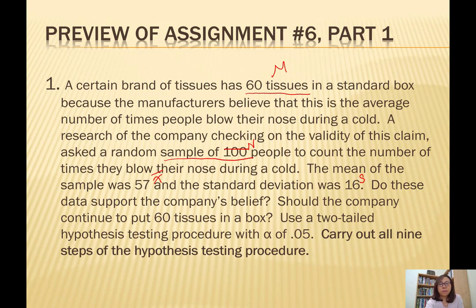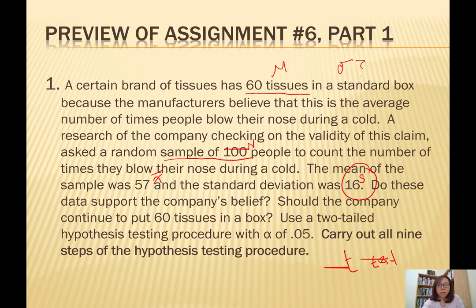Given this information, would you do a t-test or a z-test? It depends on what's missing. What's missing is the standard deviation of the population — we don't know that information. When we don't know that but we have an estimate, we're going to do a t-test. So carry out the nine steps: set up H₀ and Hₐ for step one, calculate T-obtained, set up T-critical, and do a t-test.